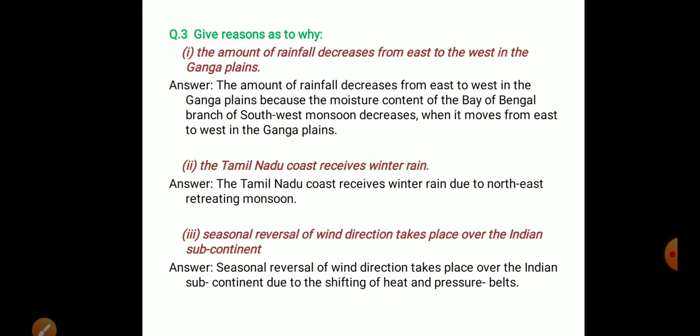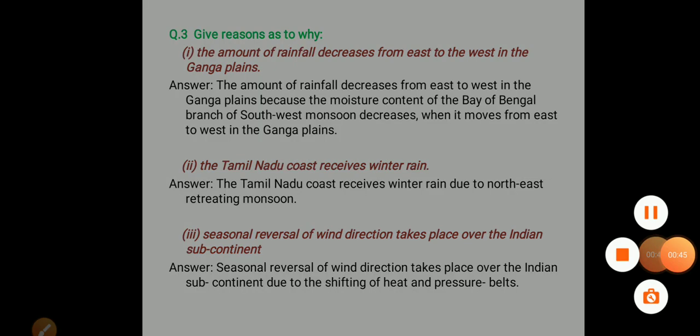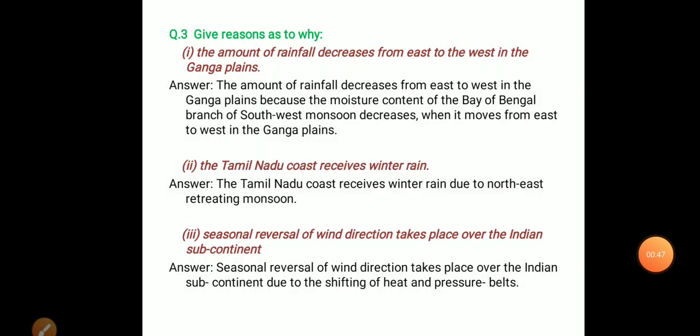Question number 2: Give reasons as to why the amount of rainfall decreases from east to west in the Ganga Plain.